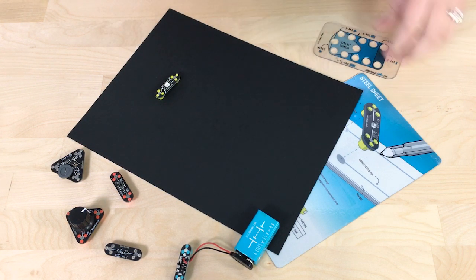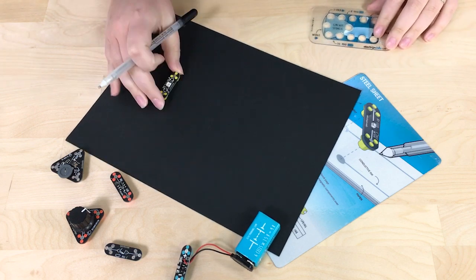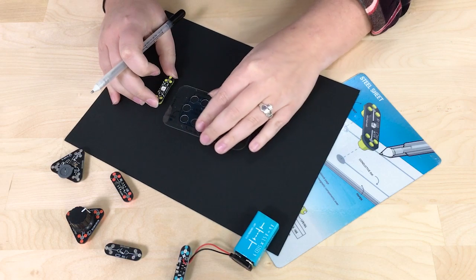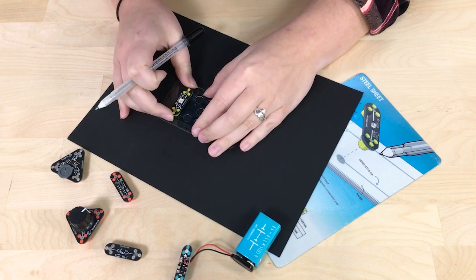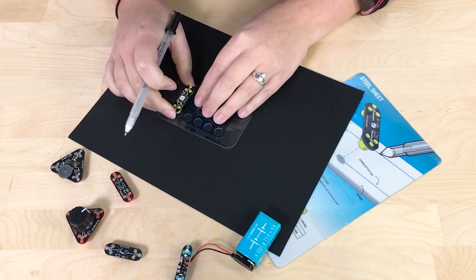To use the BiLED module we're going to take our module and the stencil that we get in our kit. The module fits right in between those two holes.